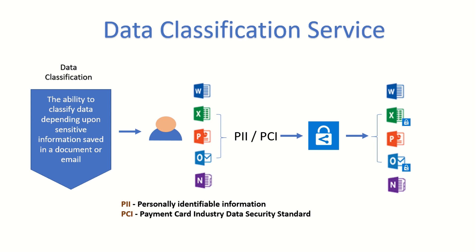Taking this to another level, you can actually automate this process with AIP. So as a user, when I include a credit card number in an email and click send, that email will get automatically classified. Since classification is done in real time, all the analytics are there so you can track how many sensitive documents are created, and depending upon different classification labels, you can track how data is being generated in your enterprise. This is exactly what the data classification service provides.